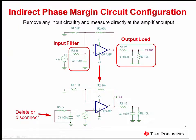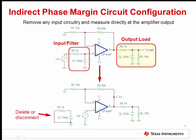Circuit modifications are occasionally required before indirect phase margin measurements can be made. First, all indirect phase margin measurements must be made directly at the output of the amplifier, not after any output filtering. However, be sure to leave all output loading connected to the amplifier to test its effects and the stability of the circuit. Input filtering must be removed completely from the circuit so the input step or AC signal is applied directly at the non-inverting input of the amplifier.